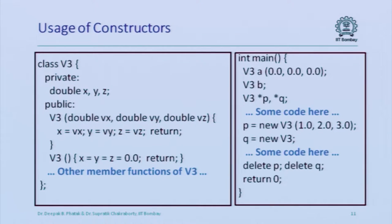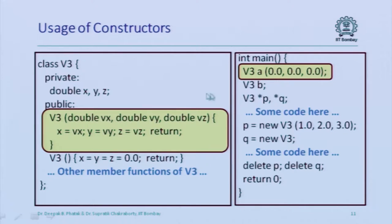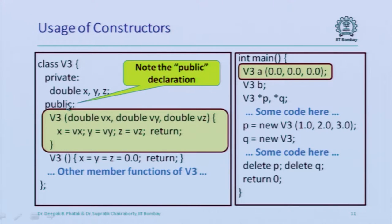Here is another example showing this more clearly. The same class V3 has two constructor functions with the same name but different typed parameter lists — one takes three double arguments, one takes no argument. In the main function, object A of type V3 is declared with three parameters, so the three-double constructor gets invoked. Note also the public declaration: the constructor functions have been declared public, because they are going to be invoked from the main function after the objects have been allocated. Any member function invoked from main must be public. If declared private, it can only be accessed within that structure's member functions.